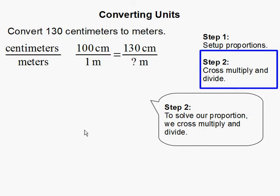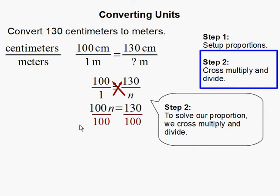Step 2: Cross multiply and divide. And we use this technique to solve for the unknown value in our proportion. The unknown value becomes a variable. And we cross multiply. 100 times n is 100n. 1 times 130 is 130. And then we solve for n by dividing by 100 on both sides of the equal sign.